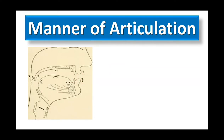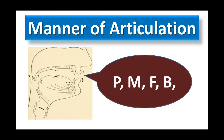When consonant sounds are created, air is obstructed and then released, and the sounds are produced. Air flows from the lungs and comes out either from the mouth or from the nose. It is obstructed — that means it is restricted and interrupted — and then it is released and the sounds are produced. So here I'm talking about consonant sounds. There are various ways in which the organs of speech interact with each other to create these sounds.